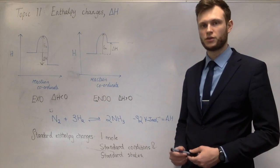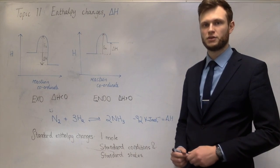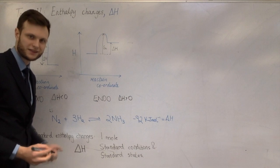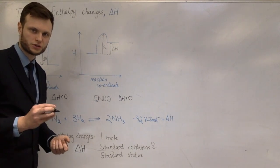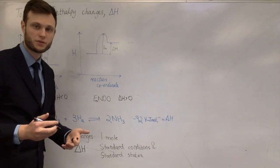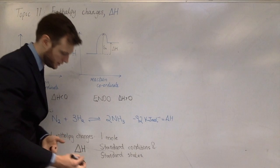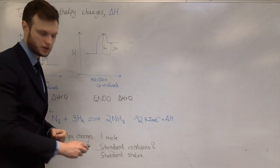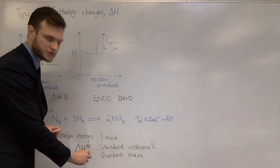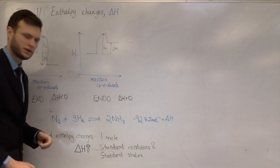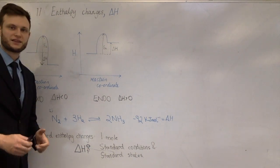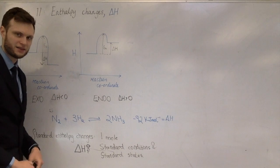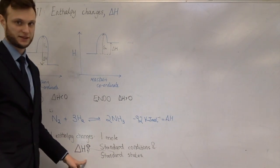Standard enthalpy changes have specific symbols. The enthalpy change symbol is delta H. The standard symbol is a circle with a horizontal line through it — sometimes seen as just a circle. For a standard enthalpy change of formation there's a subscript F; for neutralisation it's N; and for combustion it's C.